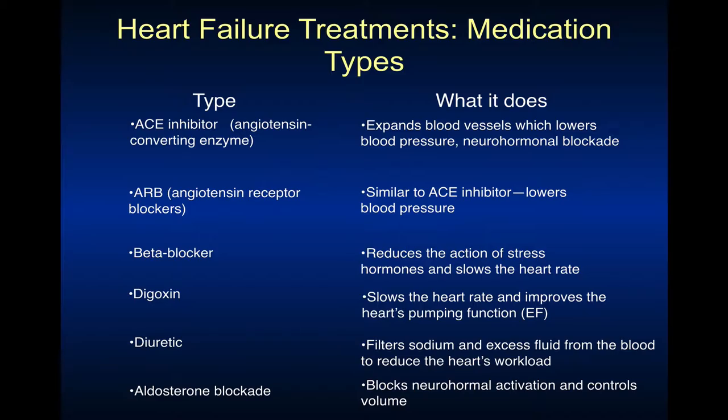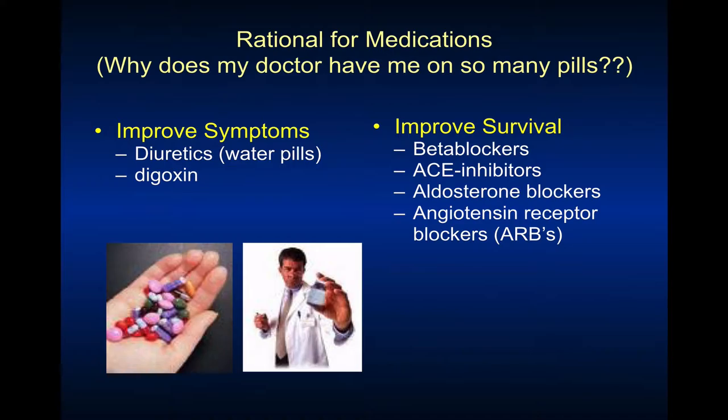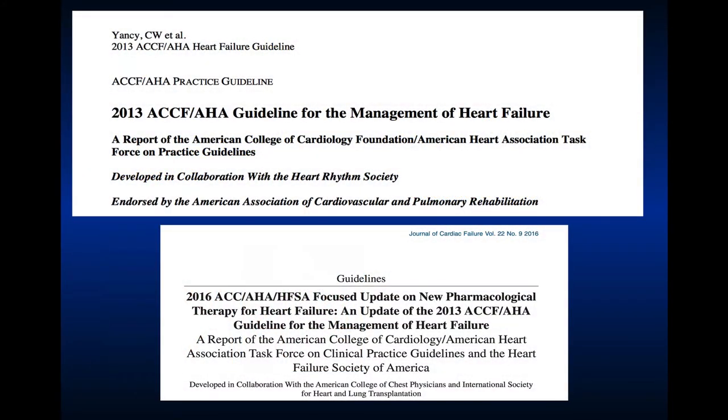Digoxin, although it doesn't affect mortality, can help improve the heart's pumping function through its positive inotropic effect. Diuretics — though we classically think about them with heart failure — we often go with loop diuretics for two reasons: they're more potent to pull off fluid, and they also work in people with chronic kidney disease. Thiazides are not as effective when we get to a creatinine clearance of 30 mL per minute. Another drug we may add is aldosterone blockade — spironolactone, our classic agent — which acts as a diuretic and also blocks aldosterone.